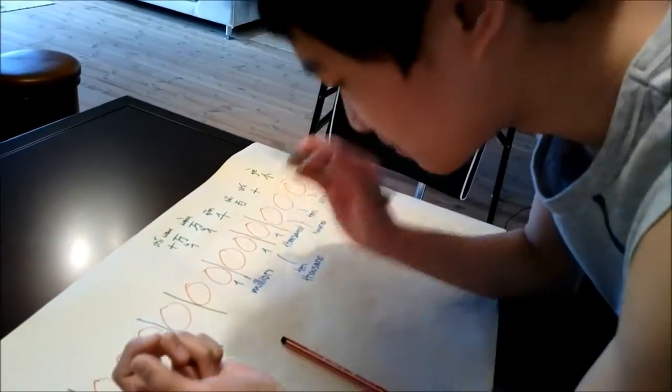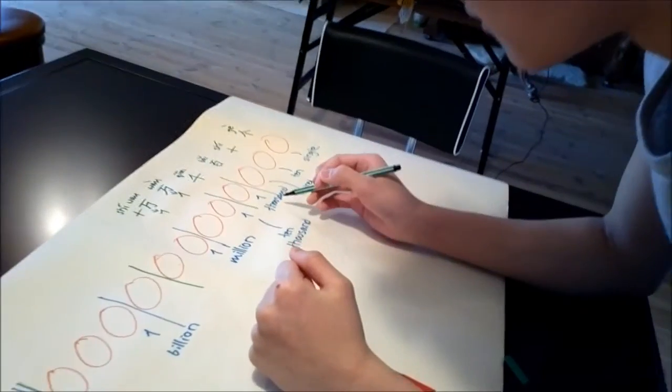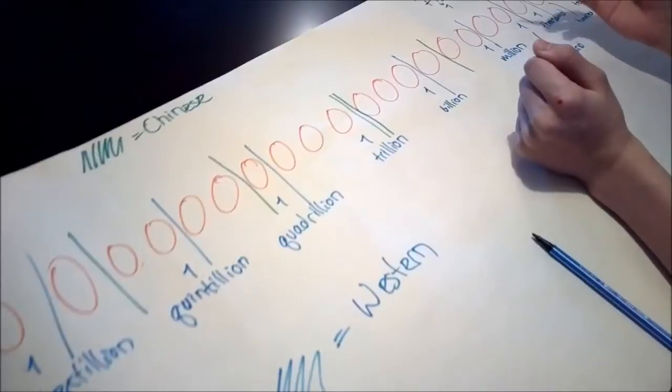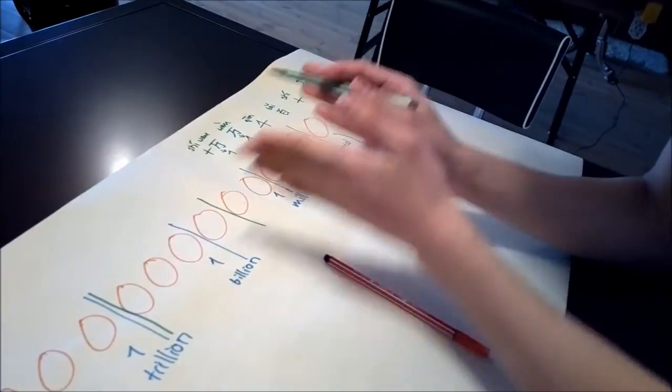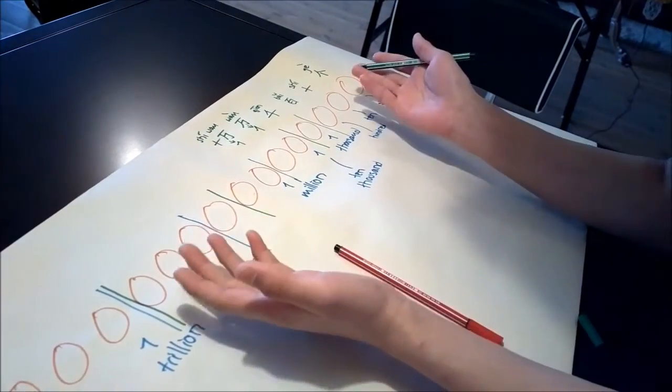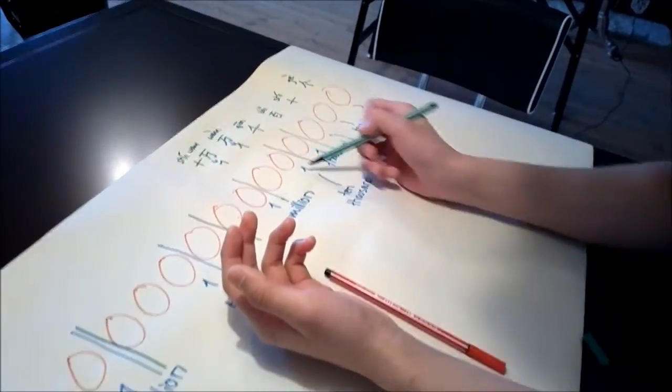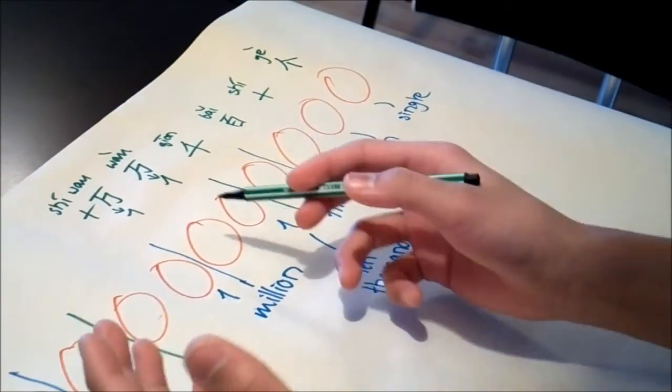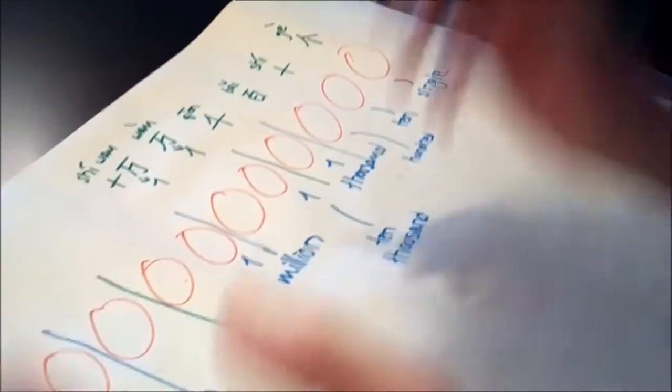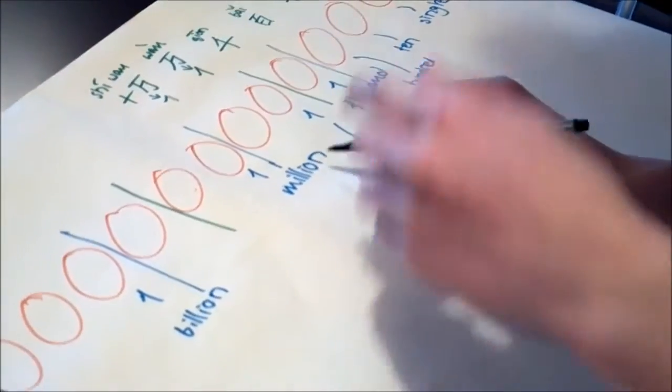So now you guys get it. It's basically the same thing after every four zeros. But in Western culture, we have this thousand, million, billion, trillion, quadrillion, quintillion, sextillion. So that's basically a different name for every three zeros. But in Chinese, we have wan, which is the first different word after four zeros. And then after another four zeros, there's another different word for it. Just like billion is a different word from million.